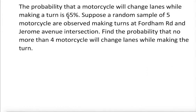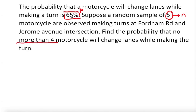Let's take a look at the information. 65 percent — that's the p. And this is a fixed trial, so that's n. And 'no more than four motorcycles' — this is telling us we cannot exceed four, so that would be my x, or small letter r.